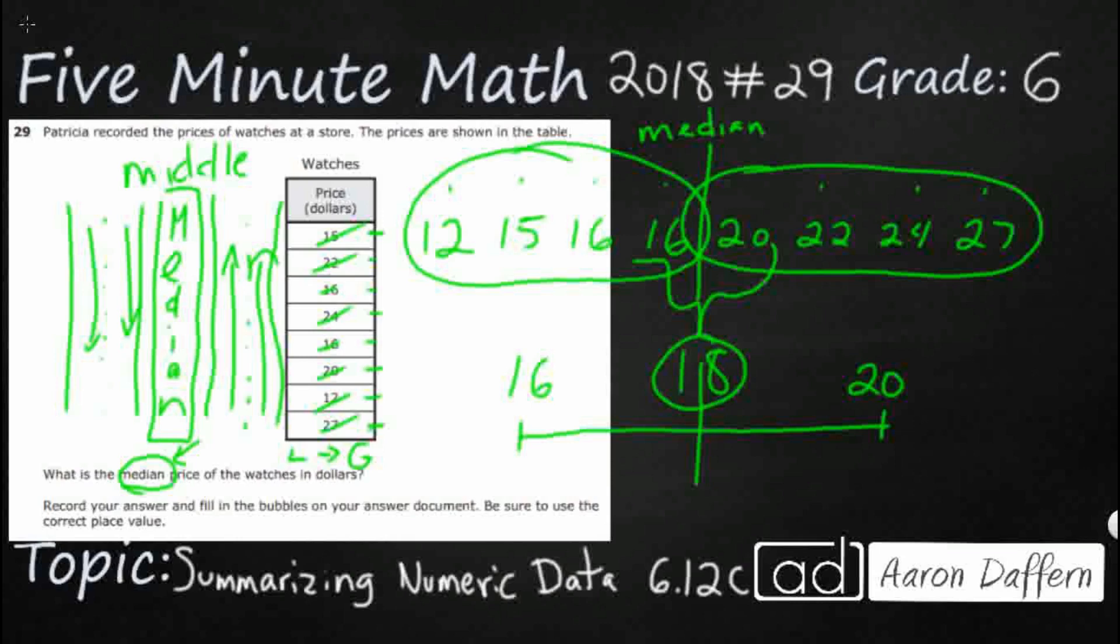So you can actually have a median that is not even in your data set if it falls between the two numbers on either side of the median and it is the exact middle. So once again, we've got 16 and 20 on either side of our median line, and 18 comes right in between those two.